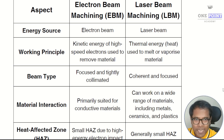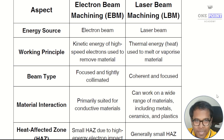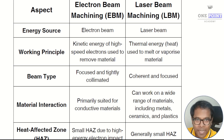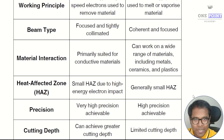The laser causes instant vaporization and melting of the material, resulting in overall material removal. Third is beam type: in electron beam machining the beam is coherent and collimated, meaning all electrons move parallel to each other. In laser beam machining, all rays are coherent and focused on a common single impact point. Fourth is material interaction: electron beam machining is primarily suited for conductive materials, whereas laser beam machining can work on a range of materials including metals, ceramics, and plastics.